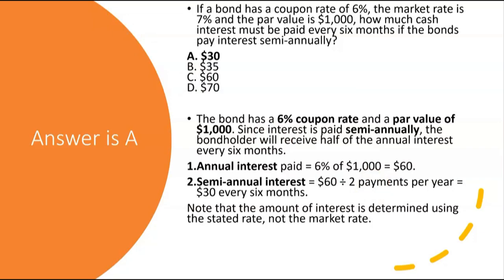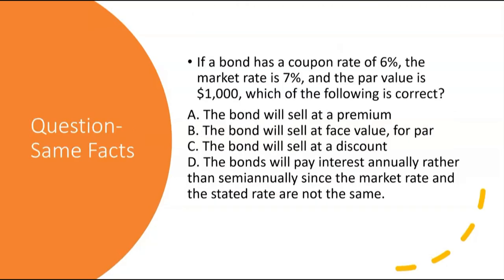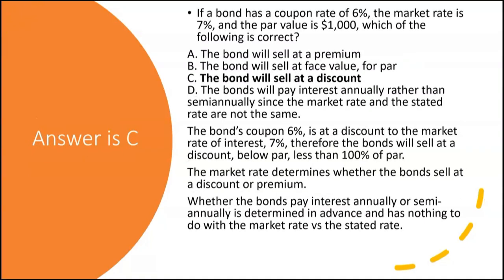Same facts — coupon rate 6%, market rate 7%, par $1,000: which of the following is correct? Will the bond sell at a premium, face value, discount, or pay interest annually rather than semi-annually? The answer is C — the bond will sell at a discount, because the coupon rate of 6% is at a discount to the market rate of 7% on the day the bonds are issued. It is the market rate that determines whether bonds sell at a discount or premium.